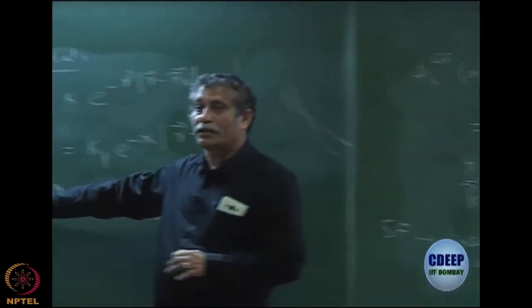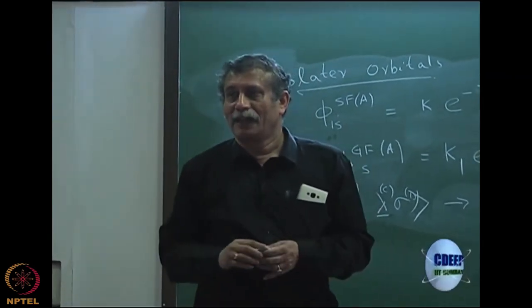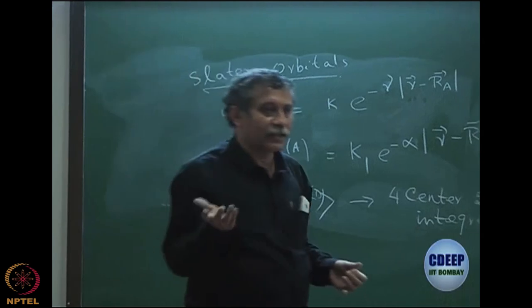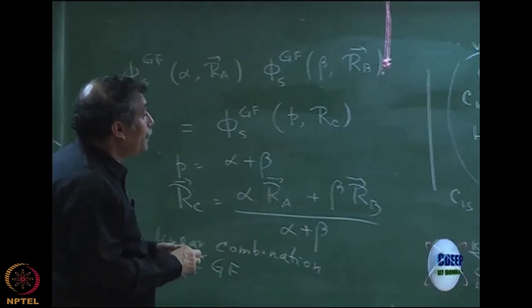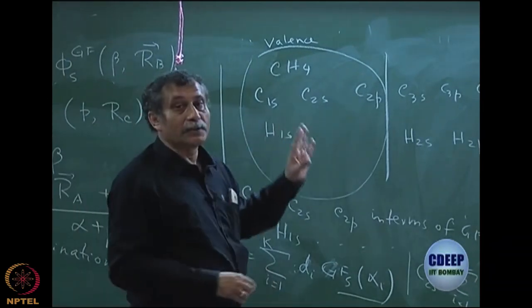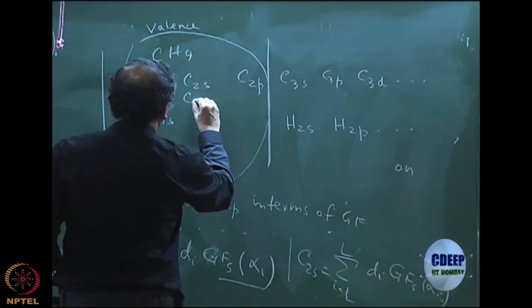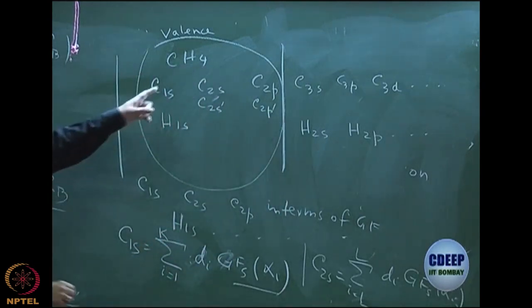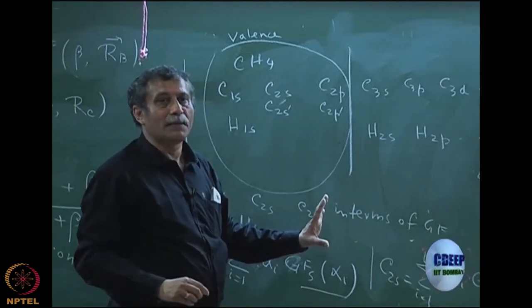An S-type Slater is expanded by S-type Gaussians — by symmetry, using P-type Gaussians for an S-type would be meaningless (the expansion coefficient would be zero). If I have a P-type orbital, I use P-type Gaussians. More interestingly, the valence set itself is often doubled: for example, using carbon 2s and 2s', carbon 2p and 2p', and hydrogen 1s and 1s'. These are called double zeta valence (DZV) basis sets. The 2s and 2p are expanded by the same number of Gaussians, and 2s' and 2p' by the same number.